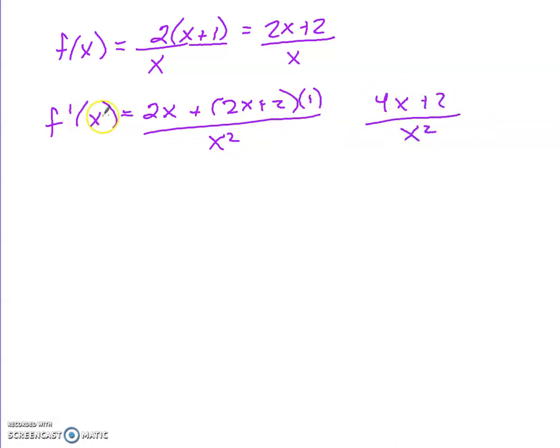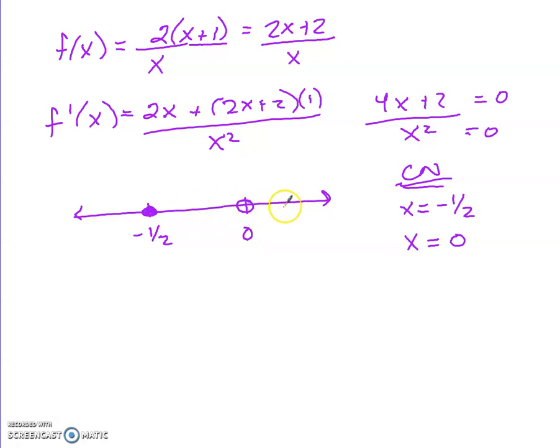So normally when we take the derivative, we would look for when the top is zero and the bottom is zero to get our critical numbers. So our critical numbers, the top is zero when x equals negative one half, and the bottom is zero at zero. So in class, we've talked about this idea of being a zero versus being undefined. And this is what I want to point out to you. Then you would check for increasing and decreasing. So I could plug in, let's see, I could plug in 1. I plug in 1 here, I get a positive over a positive. This is a positive. I can tell you right now, this is positive and this is negative.